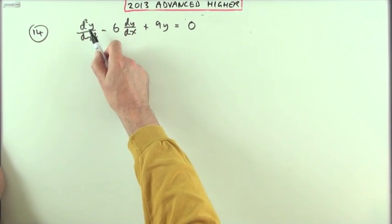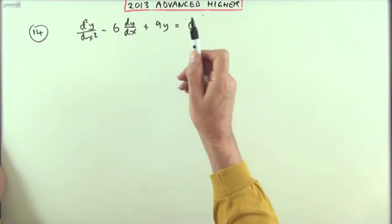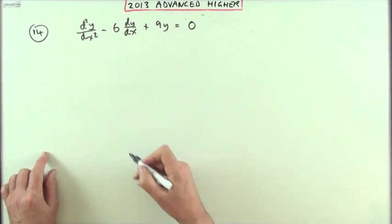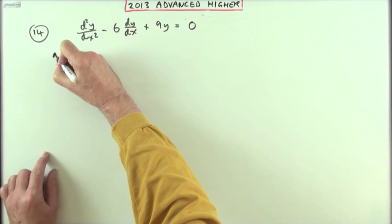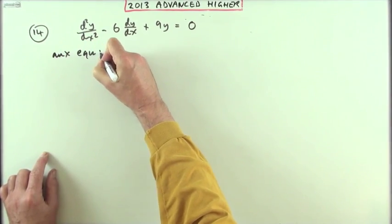That will be a function of x which, if you feed it through this, will give you an answer of zero. To find that complementary function, I'll form this auxiliary equation.